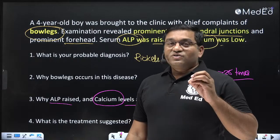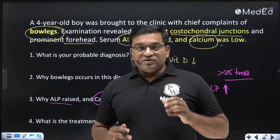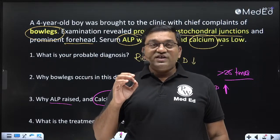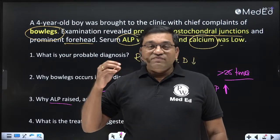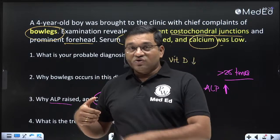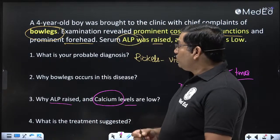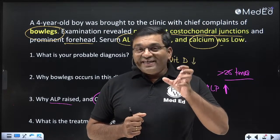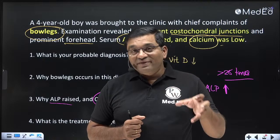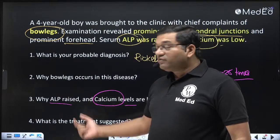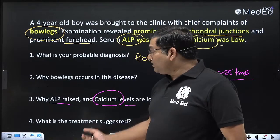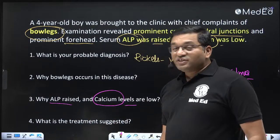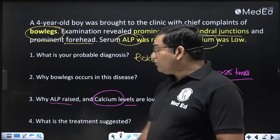The suggested treatment in this disorder is increased exposure to sunlight, because sunlight is very important for conversion of 7-dehydrocholesterol into cholecalciferol. Vitamin D-rich foods such as meat and fish oils are also important. These foods are rich in vitamin D activity. Vitamin D is synthesized from cholesterol, so cholesterol-rich foods should be included in the diet.